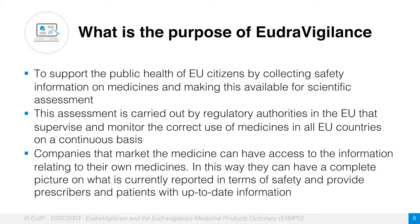What is the purpose of EudraVigilance? EudraVigilance supports the public health of EU citizens by collecting safety information on medicines and making this available for scientific assessment. This assessment is carried out by regulatory authorities in the EU that supervise and monitor the correct use of medicines in all EU countries on a continuous basis. Companies that market the medicine can have access to information relating to their own medicines, allowing them to have a complete picture of what is currently reported in terms of safety and to provide prescribers and patients with up-to-date information.